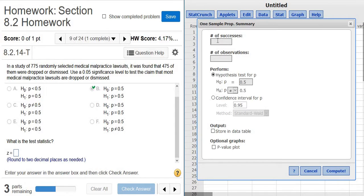And then Successes is the 475. It says 475 of them were dropped or dismissed. So Success is having this lawsuit that is dropped or dismissed. And the Observations is the total number. So in this case, it's 775.